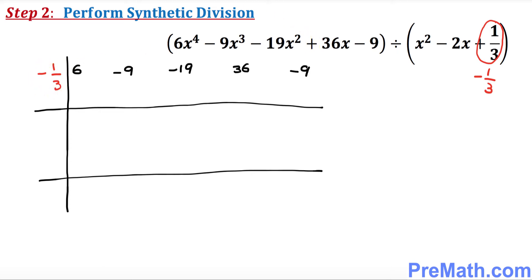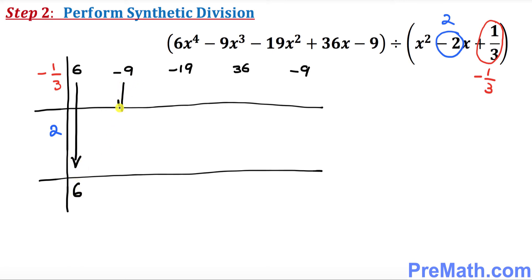Look at the coefficient of x, which is negative 2. The opposite sign of this is positive 2, so positive 2 goes in the second box. Now let's go ahead and get started with our synthetic division. The 6 stays as it is, and negative 9 goes right here.